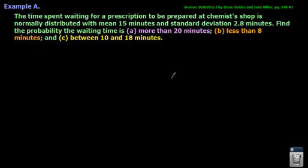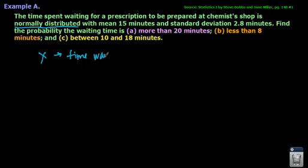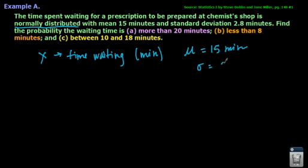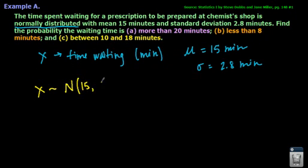Any time I use the normal distribution, I need to ensure that my data is actually normally distributed. You could tell by making a histogram or looking at data points, or in this case, the problem tells us it's a normal distribution. I'm going to call the time X — time waiting in minutes. I'm defining my variables. We know that mu is 15 minutes and standard deviation is 2.8 minutes. I'll note that the second parameter in the normal distribution notation is the variance, not the standard deviation, so I'll write 2.8 squared.